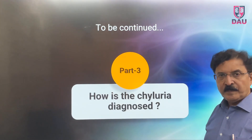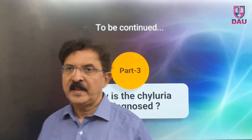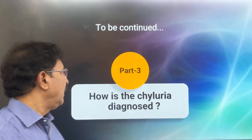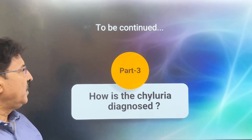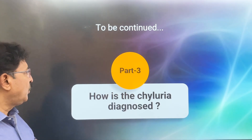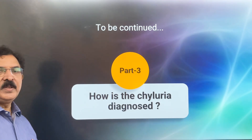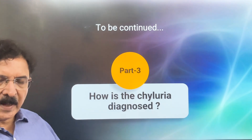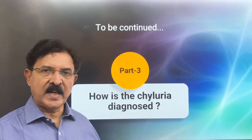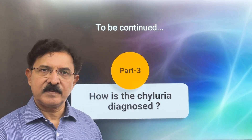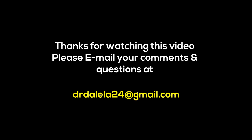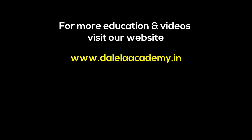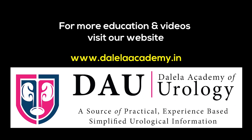That is how the patient gets adversely affected by chronic persistent chyluria, and that is why we have to treat this disease. In Part 3, I will talk about how chyluria is diagnosed and what steps we take in making a scientific diagnosis. Thank you very much for being with me. In case you have any questions or comments, please write to me on my email.